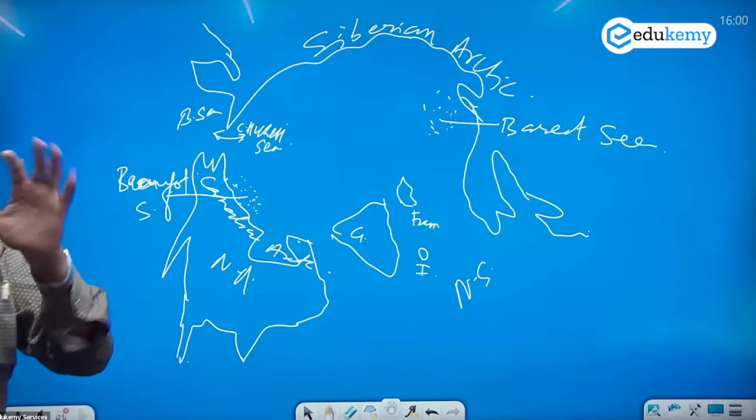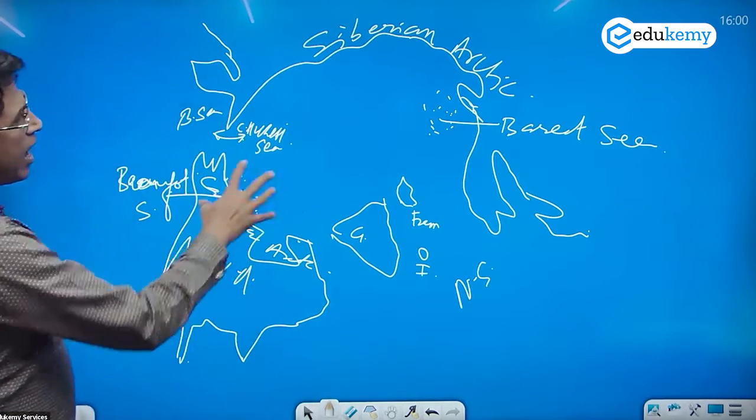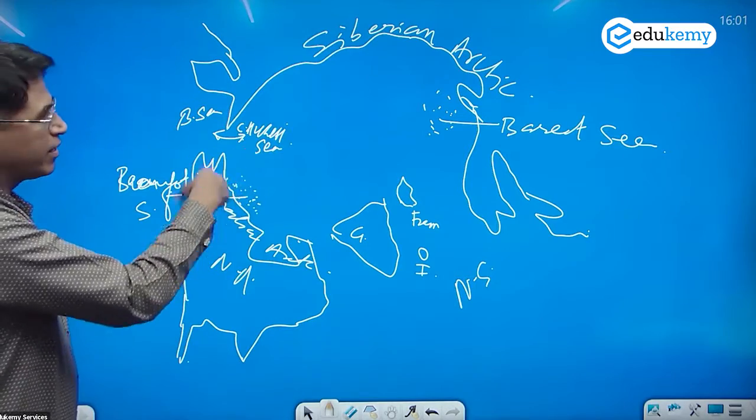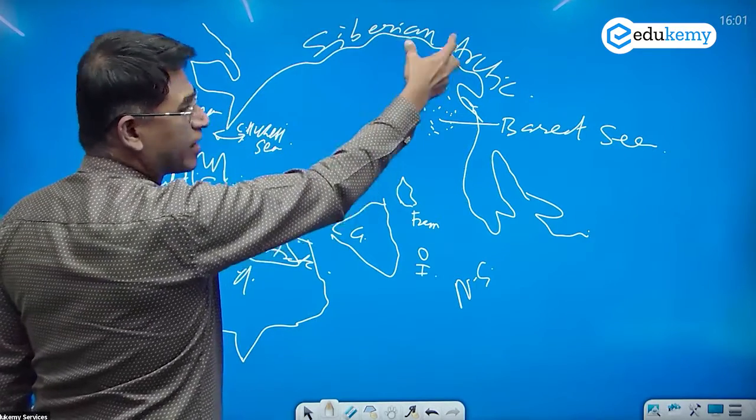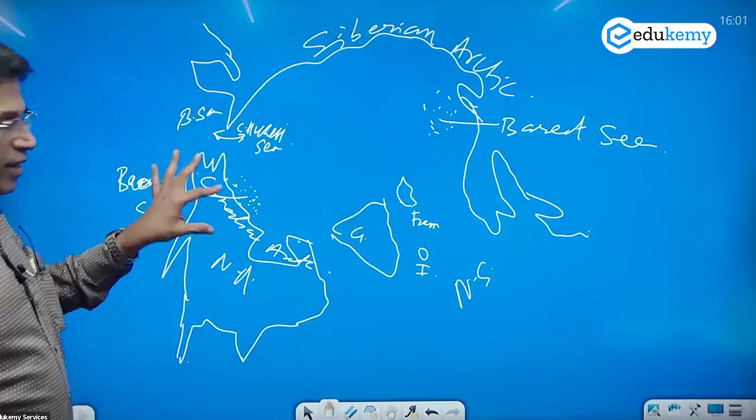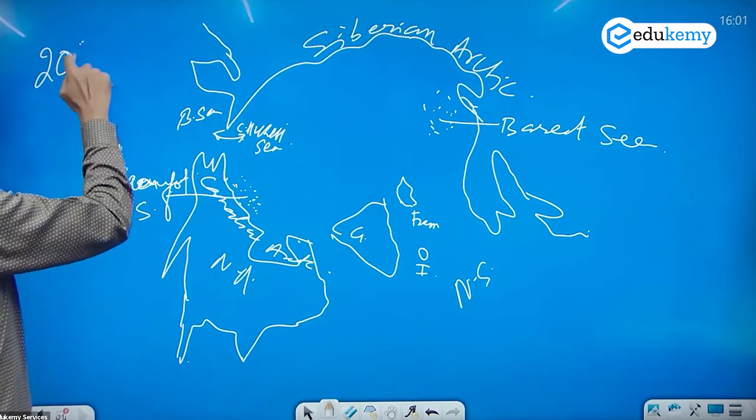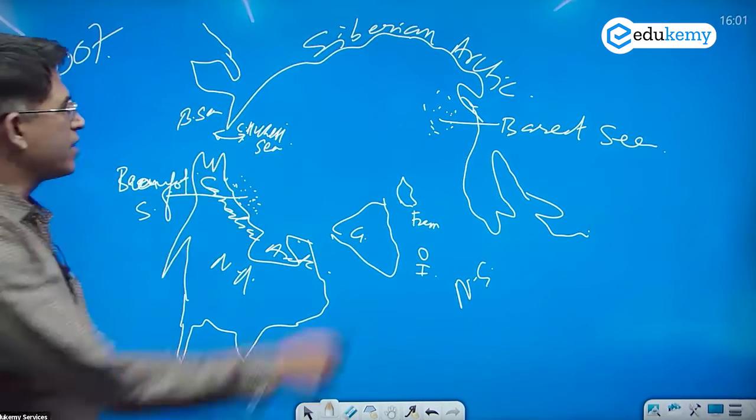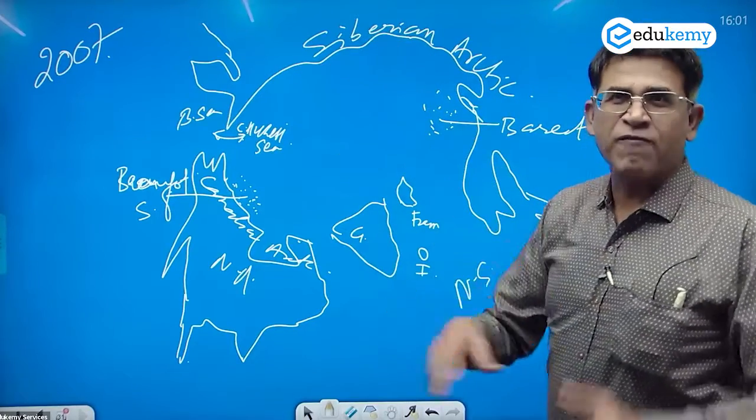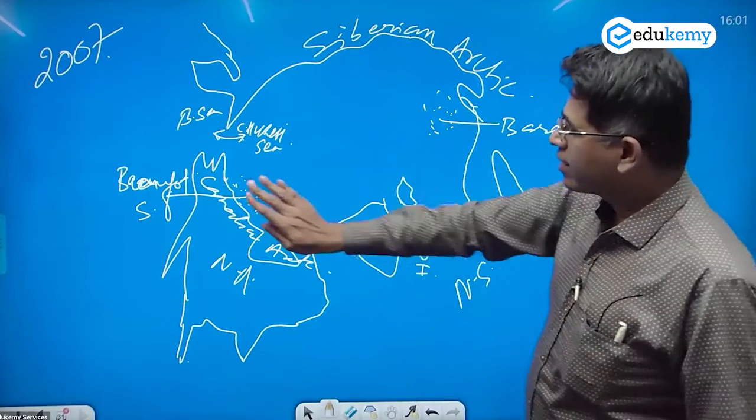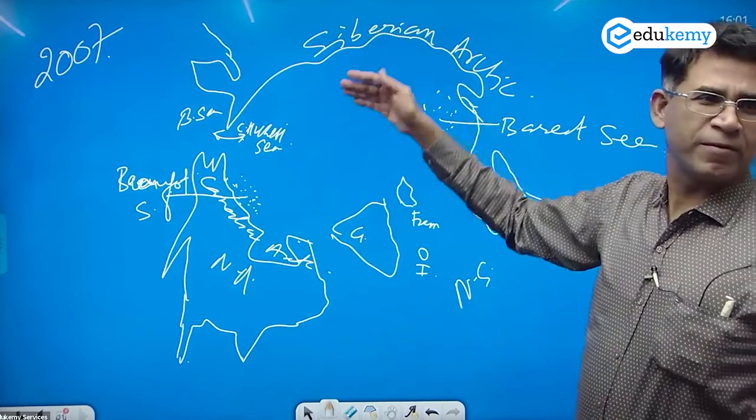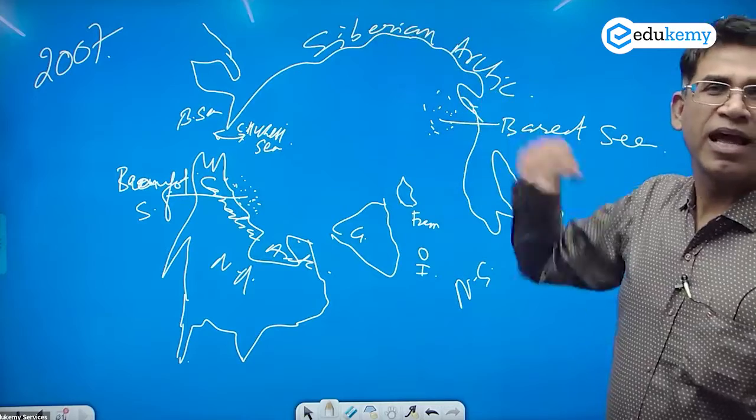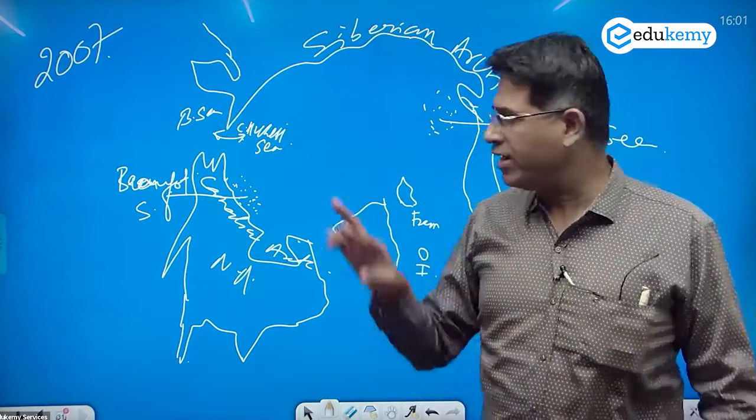Now for reasons not very well known, this area and this area, there is a dipole here. We have a high pressure system here and we can have a low pressure here and they can switch. As of now, since 2007 onwards, this area has had a high pressure and this area has a low pressure. There is a difference of pressure between the Canadian Arctic and the Siberian Arctic. A high pressure is now, and this is the low pressure. And every 15 years approximately, this is the change.